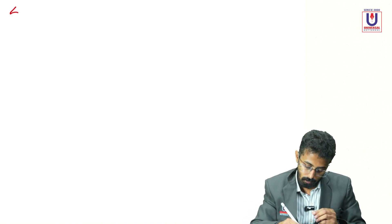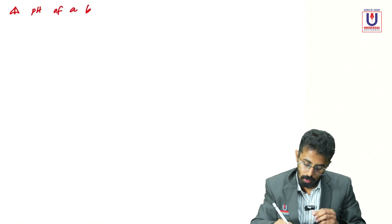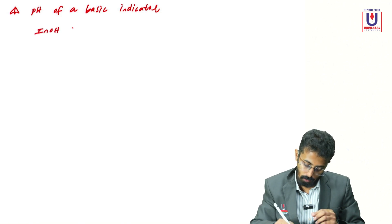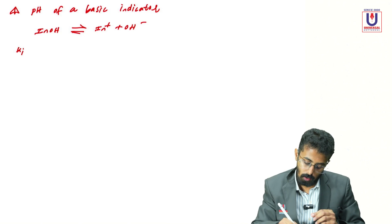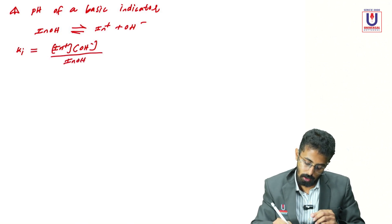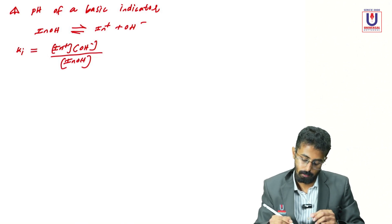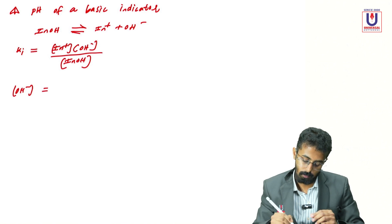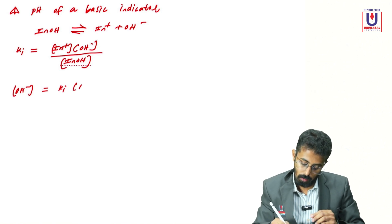Moving to the equation for calculating the pH of a basic indicator. The basic indicator InOH dissociates as: InOH ⇌ In⁺ + OH⁻. The dissociation constant Ki = [In⁺][OH⁻] / [InOH]. From this, OH⁻ = Ki × [InOH] / [In⁺].